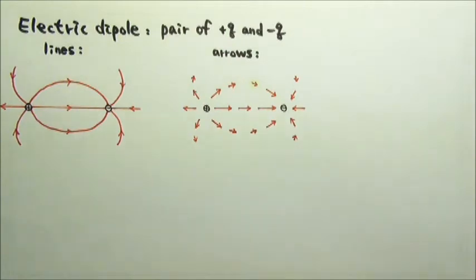Since the two charges have equal amount, the lines and arrows will look symmetric.